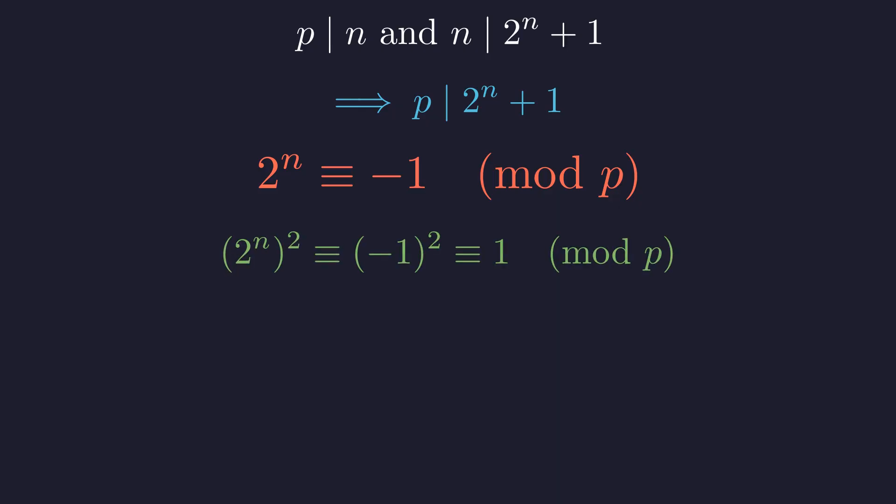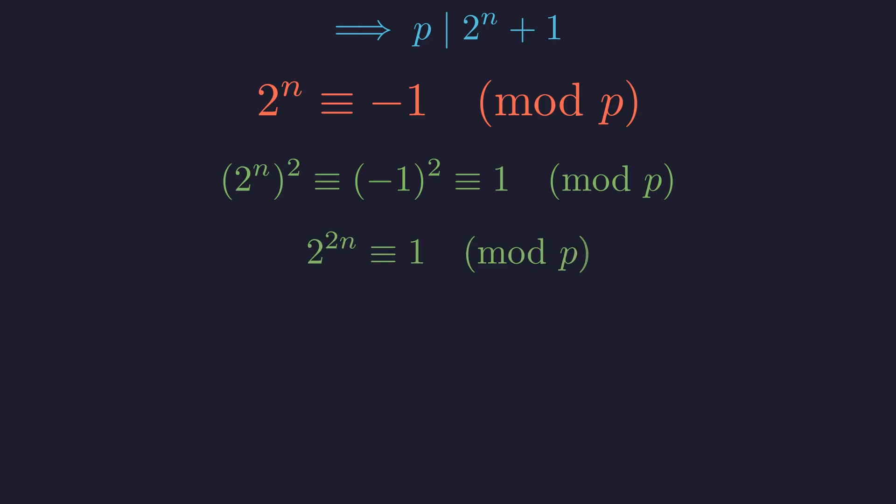If we square both sides, we get 2 to the 2n is congruent to 1 modulo p. This gives us a clean power identity that will be crucial for our next step.